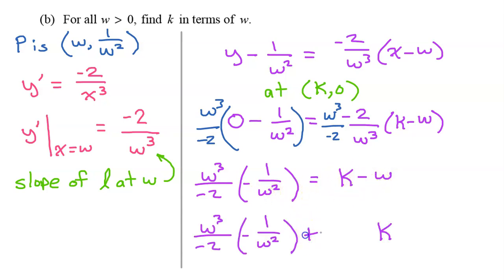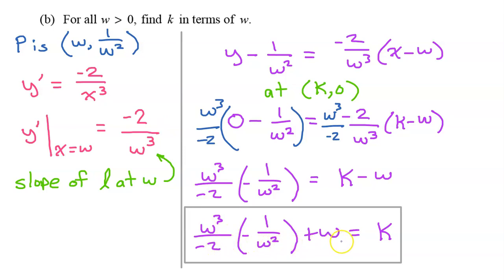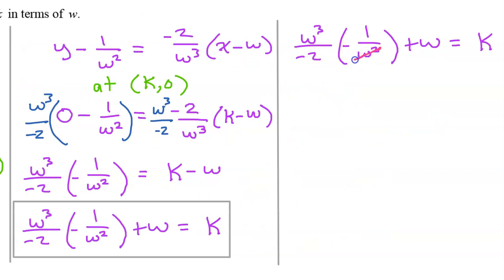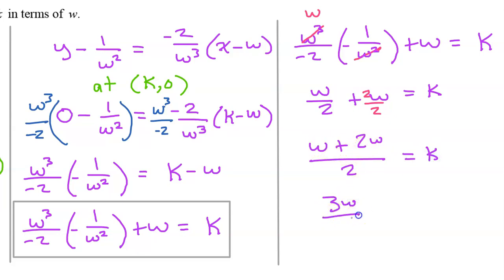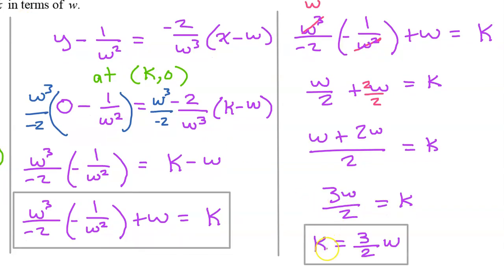Adding w to both sides gives us k as an expression. Let's simplify: w squared cancels two of the w's leaving just w, and a negative times a negative is positive, giving us w over 2 plus w. With like denominators, that's w plus 2w over 2, so k equals 3w over 2.